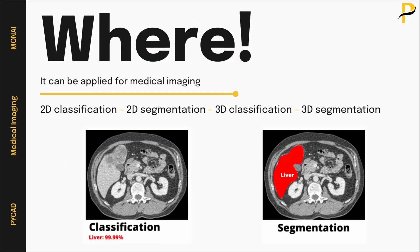MONAI can be used for 2D segmentation, 2D classification, 3D classification, and 3D segmentation. For those who don't know the difference: classification, or image recognition, is shown in the image on the left — it says that this image contains a liver with a confidence score of 99%, but we don't have any information about the position or location of the liver in the image.